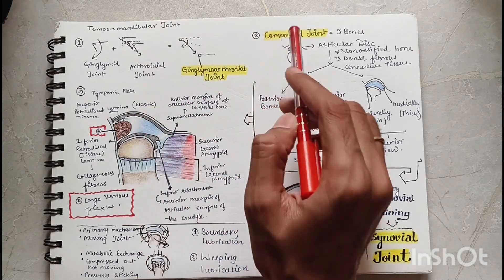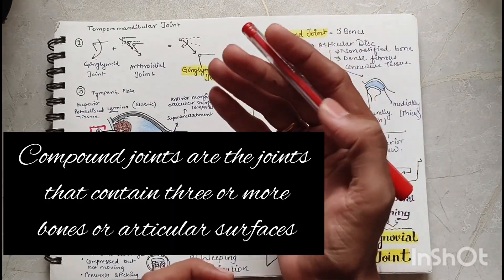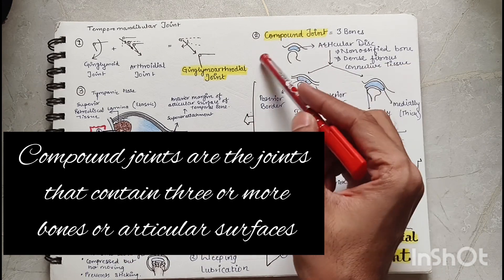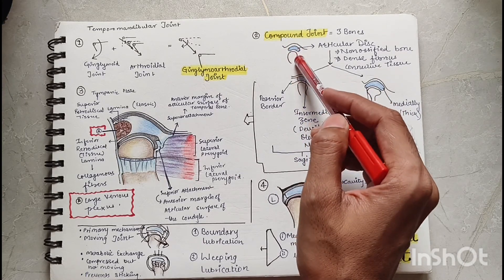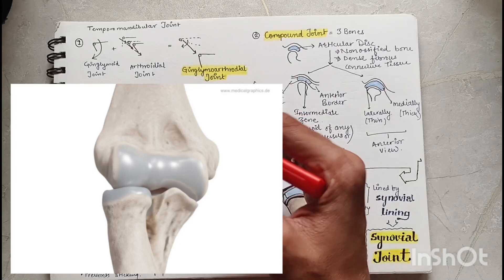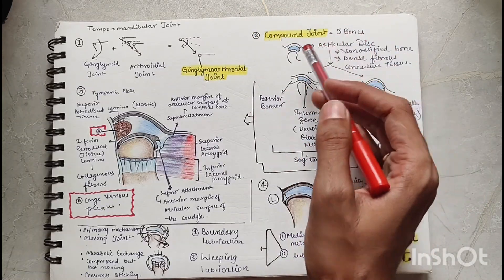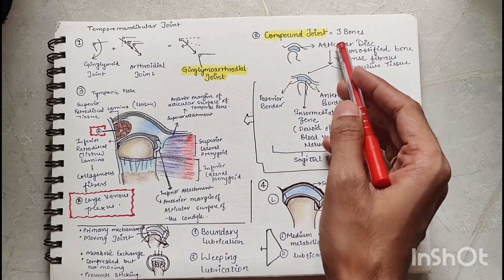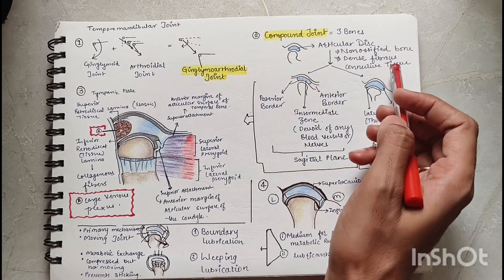Second, it is a compound joint. A compound joint is any joint made up of three bone surfaces. Our TMJ has the articular surface of the temporal bone, articular surface of the condyle, and the articular disc in between. This disc is non-ossified bone — it is made up of dense fibrous connective tissue.